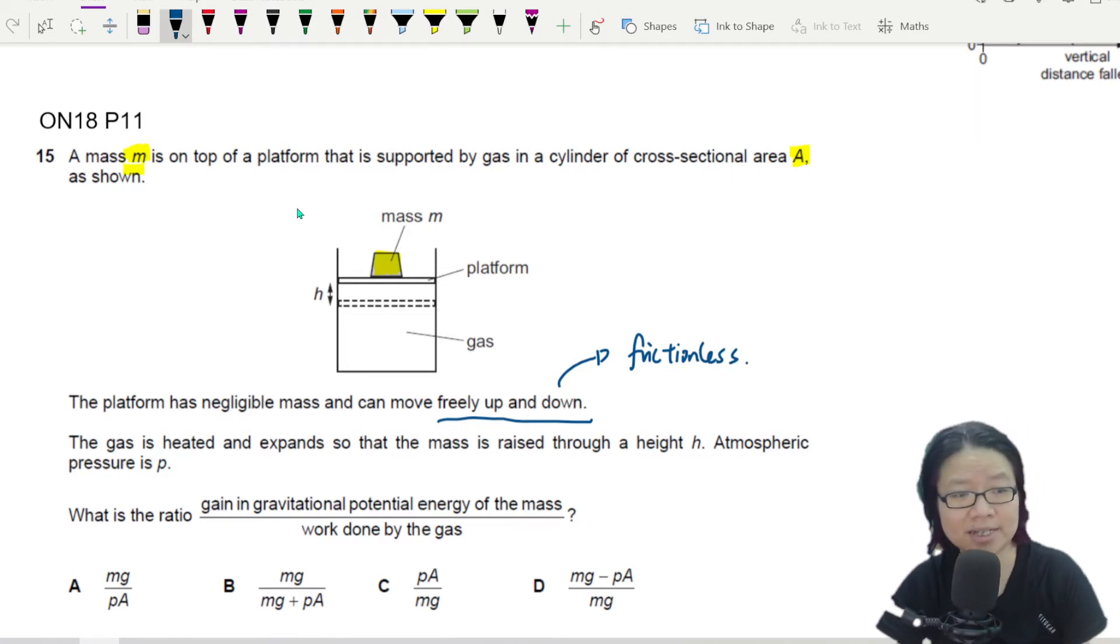The gas is then heated and expands, so it's going to go up this way, so that the mass is raised through a height h. Basically there are gas particles inside here. And when you add some heat to the gas particles, the gas particles will push against the platform, expanding and also lifting the mass m upwards.